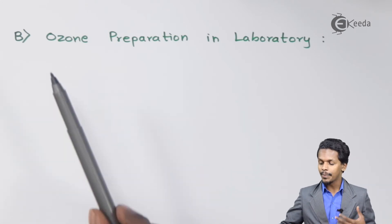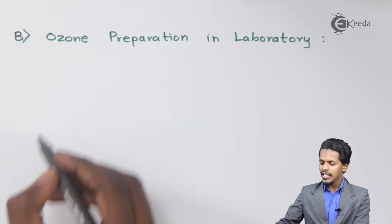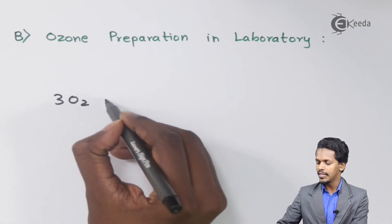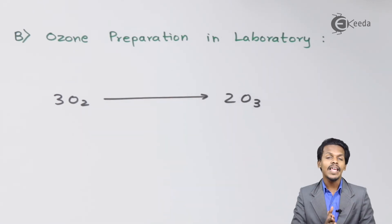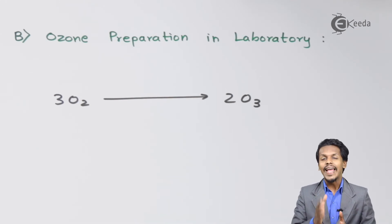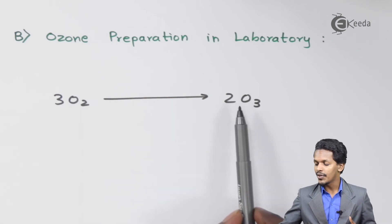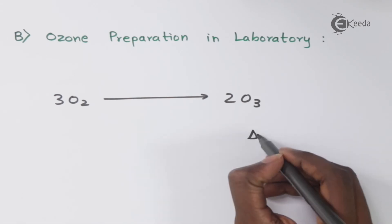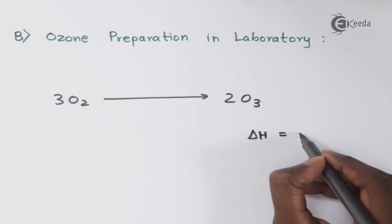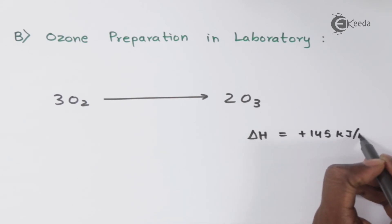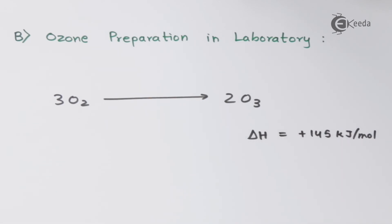Now let's discuss the preparation of ozone in the laboratory. Here, 3 moles of O2 must be converted into 2 moles of O3. A silent electric discharge is passed through pure, dry, and cold oxygen to achieve this conversion. This reaction is highly endothermic: delta H at 298 K is +145 kJ/mol. Since the reaction is endothermic, the temperature must be kept very cold. Silent electric discharge is used to prevent further decomposition of ozone, and under these conditions approximately 10% of oxygen is converted to ozone.